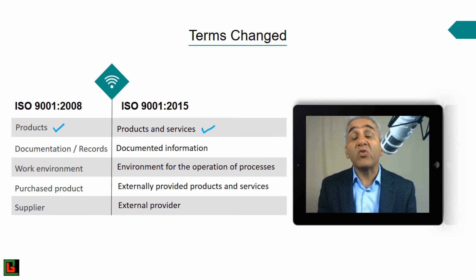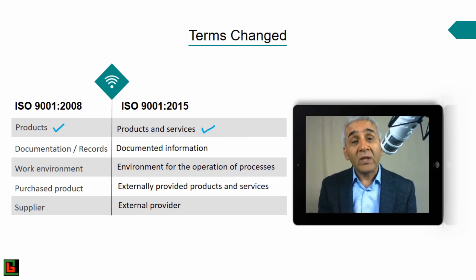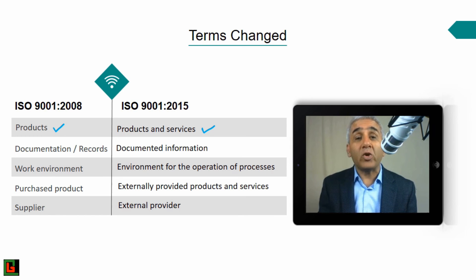There were also a few changes proposed in the earlier stages of this revision that were later dropped. For example, the term 'continual improvement' was proposed to be changed to simply 'improvement.' However, since the standard must go through voting and consensus building, some felt this was not appropriate, so 'continual improvement' still remains unchanged in the 2015 version.